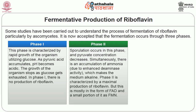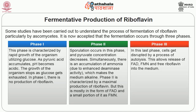In phase 2, sporulation occurs and pyruvate concentration decreases. Simultaneously there is an accumulation of ammonia, which due to enhanced DNase activity makes the medium alkaline. Phase 2 is characterized by maximal production of riboflavin, mostly in the form of FAD and a small portion as FMN. In phase 3, the last phase, cells get disrupted by a process of autolysis, allowing release of FAD, FMN and free riboflavin into the medium.